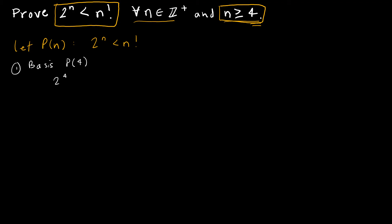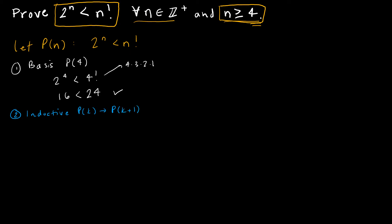So is 2 to the 4th less than 4 factorial? 2 to the 4th is 16. 4 factorial is 4 times 3 times 2 times 1, which is 24. So is 16 less than 24? Yes, it is. Then I'm going to do my inductive step. Recall that I'm going to assume p(k) and show that it implies p of k plus 1. My inductive hypothesis is 2 to the k is less than k factorial.